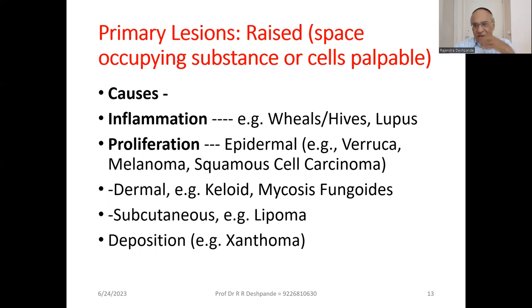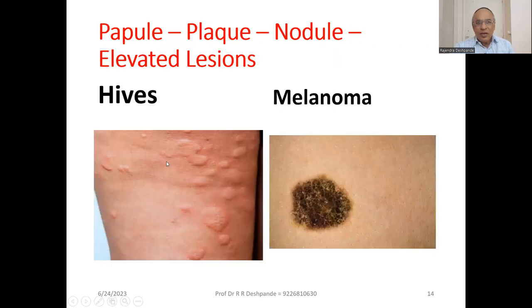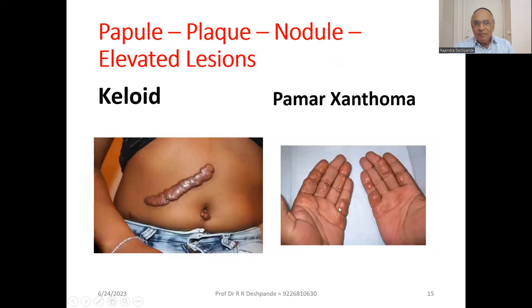Some problems we are going to discuss in detail — for example, hives, keloid which is also very common. Then subcutaneous lesions — there may be lipoma. There is also deposition, that is xanthoma. Here you can see papule, plaque, nodule — these types of elevated lesions. Here you can see hives in the artic area. This is melanoma. Then this is a keloid, maybe after surgery. This is palmar xanthoma — can you see here?